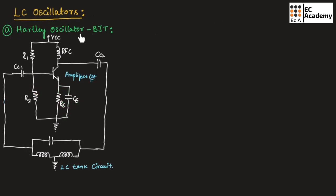Now let us understand the Hartley oscillator using BJT. The oscillator consists of an amplifier circuit as well as a tank circuit. The difference between the Hartley and Colpitts oscillator is that in the Hartley oscillator's tank circuit, there is one capacitor and two inductors — L1 and L2 — connected in parallel. In the Colpitts oscillator, the tank circuit has two capacitors and one inductor. The amplifier circuit amplifies the signal and the tank circuit produces the required oscillations.